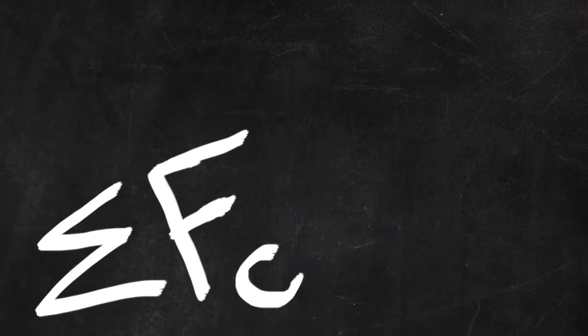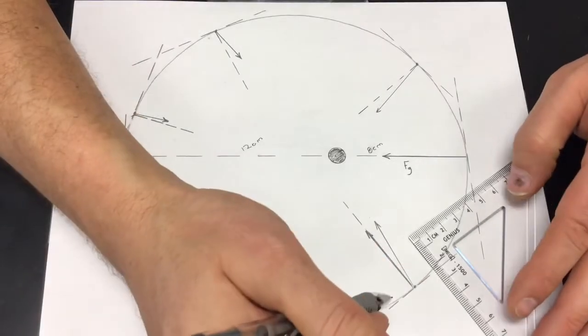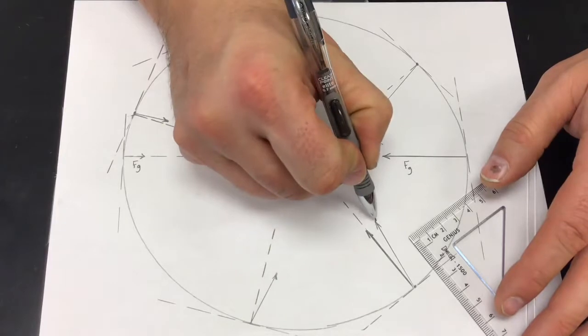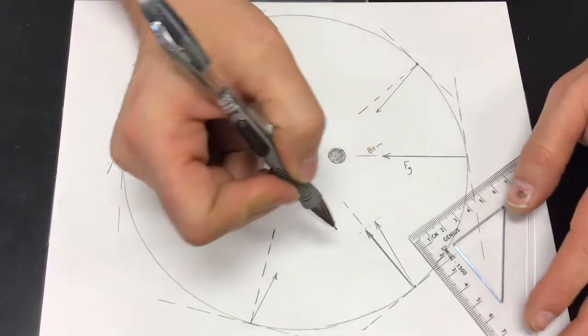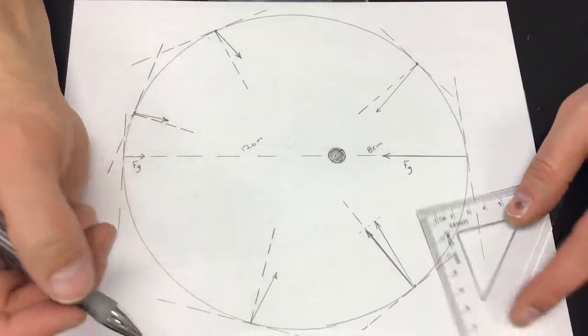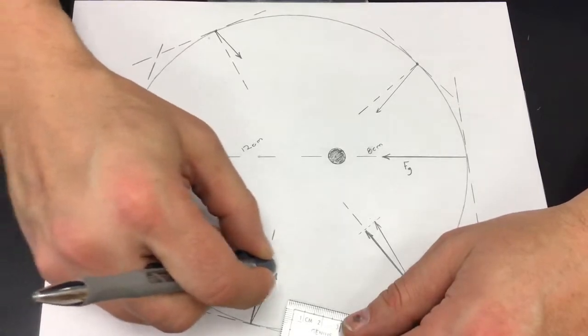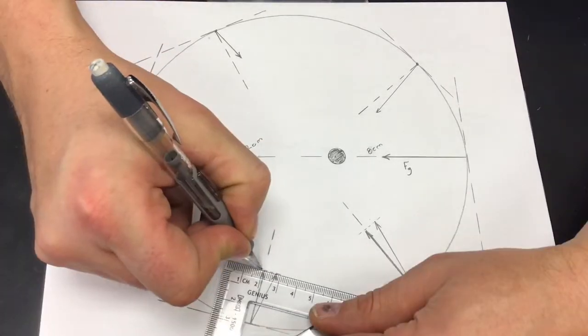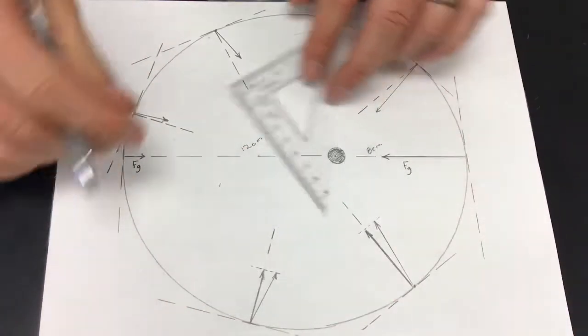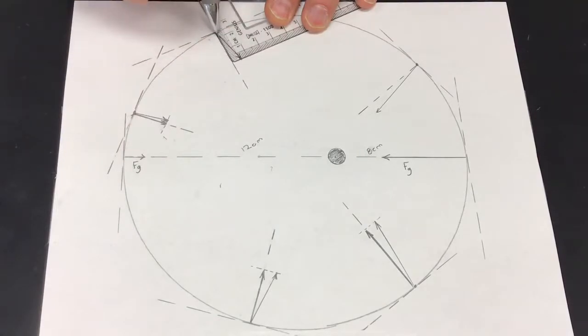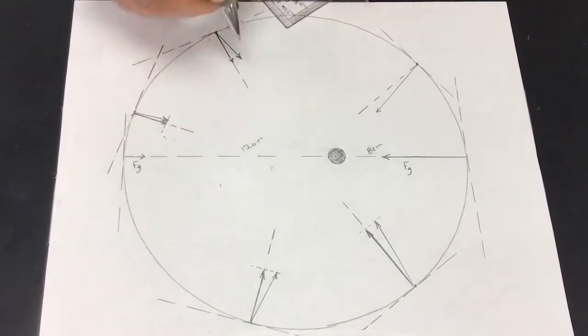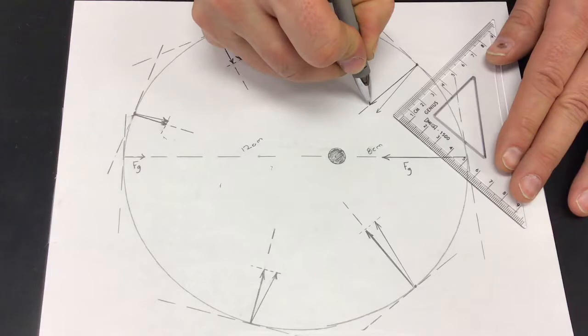That is the centripetal force, the force, the net force, that causes a change in direction. And except for the two positions along that semi-major axis, a portion, a part, a component of that gravitational force is causing the change in direction. It's the major component in all of these cases, but it is a component, a part nonetheless.